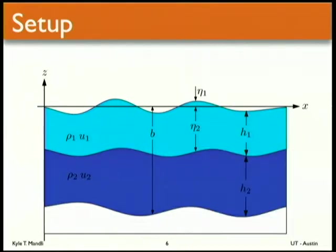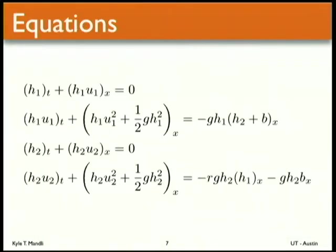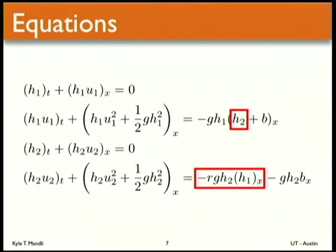A quick run through the equations we're solving: the coordinates are very similar to the shallow water equations. We have to throw density in there now and treat it explicitly. The equations themselves look very similar to shallow water — there are just two layers on top of each other with coupling terms between them. One key thing is that the layers are communicating via pressure only; there's no friction between the layers or anything like that.